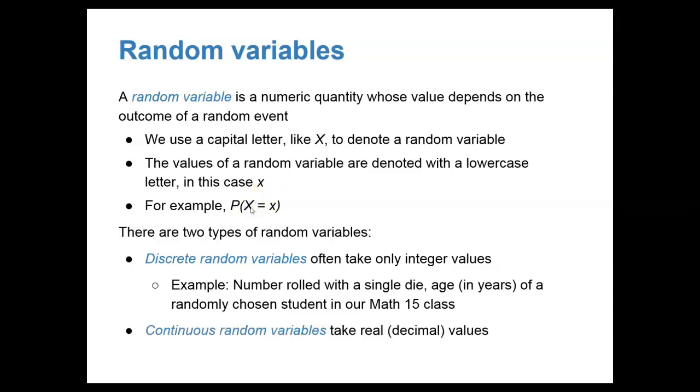The second type of random variables are continuous random variables, and those take on real decimal values. We will look at this more closely when we get to section 3.5. Some examples might be the cost of books this term, or the difference in cost of books this term versus last term.